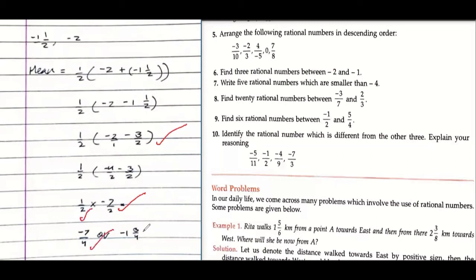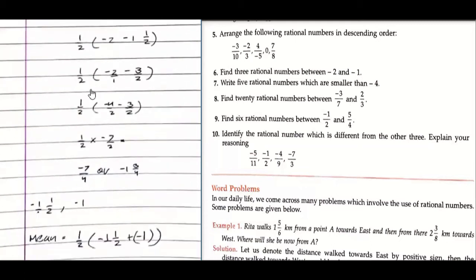So minus four upon two, minus seven upon two, multiplying by half. So that is minus seven upon four. This is also correct, so second number is there. So I will show another method where we can do it a little bit faster.